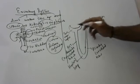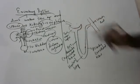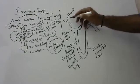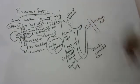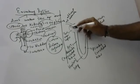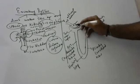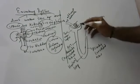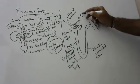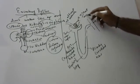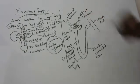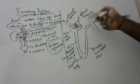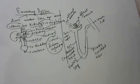Now, the renal artery branches into different arterioles. These are the afferent arterioles - they come in and divide. All of them join together to form the glomerulus.